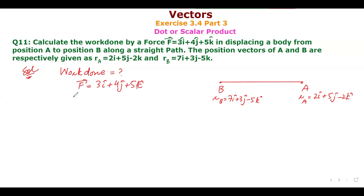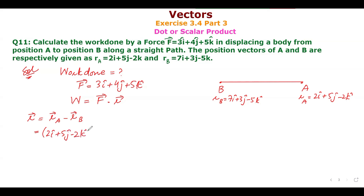To find work done, we use W = F · r, where r = r_B - r_A. So r = (7-2)i + (3-5)j + (-5-(-2))k = ... actually r_A - r_B = (2-7)i + (5-3)j + (-2+5)k = -5i + 2j + 3k.